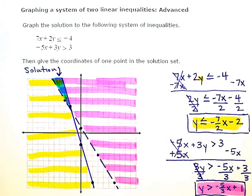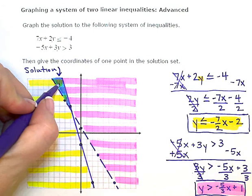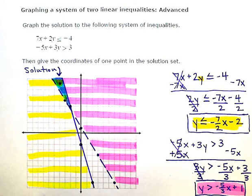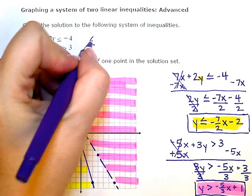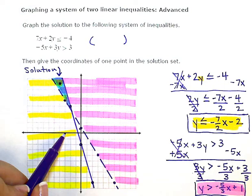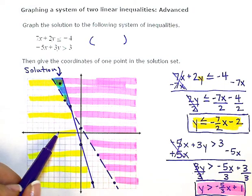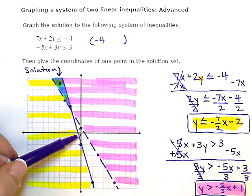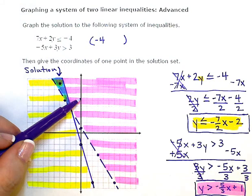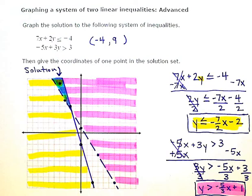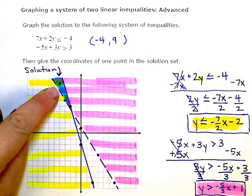So I'm going to just pick any point now that's in that area. I'm going to pick that one right there and give the coordinates. So the coordinates of that point, I am at negative 1, 2, 3, negative 4 in my x direction. And in my y direction, I've gone up 1, 2, 3, 4, 5, 6, 7, 8, 9. So I just need to name any point that's in my solution region. I picked negative 4, 9.